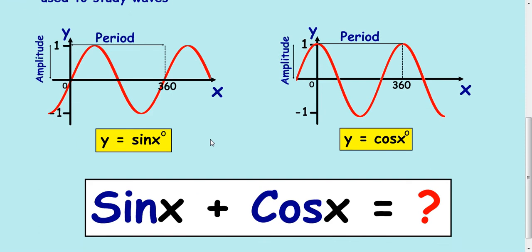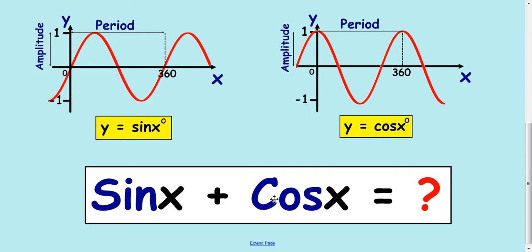What we're going to look at is what happens when you add a sine and a cos wave together. This is the idea behind the wave function. What happens when you add two waves together with different trigonometric ratios of sine plus cos.